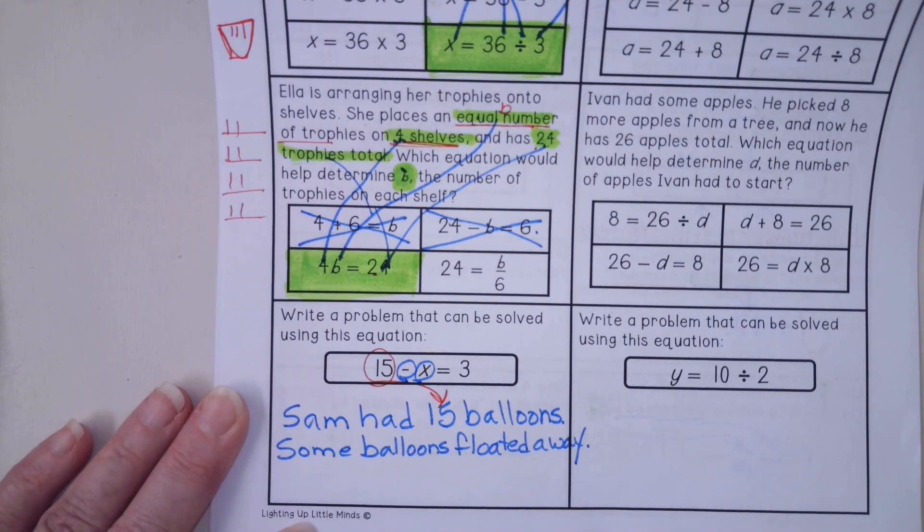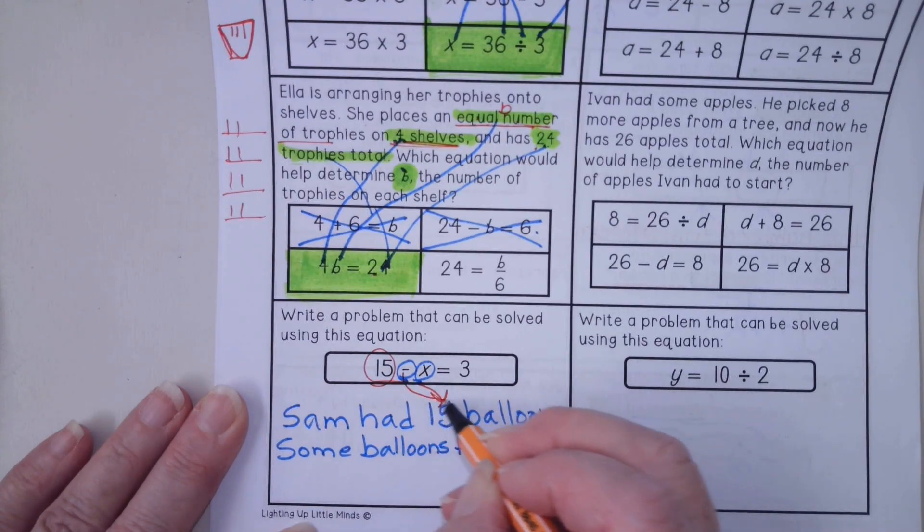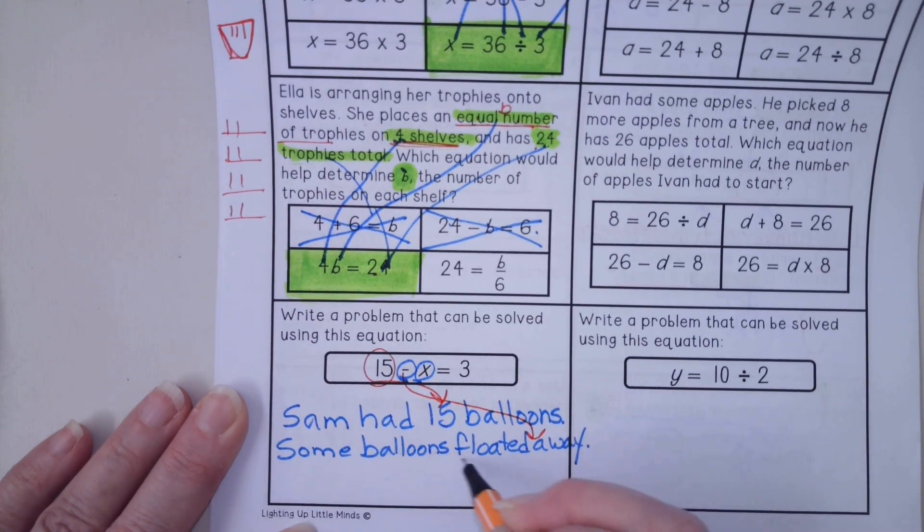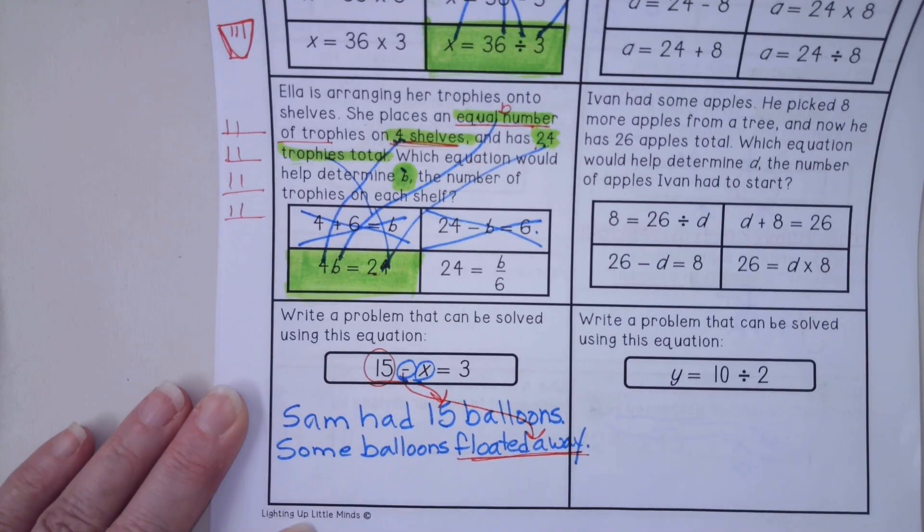So by going away, floated away, that is my subtraction. I know they're going to go away.